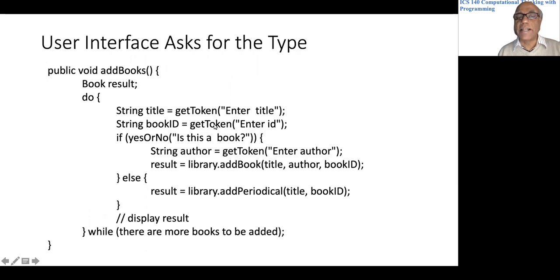It invokes the addBook method in Library with three parameters. That is what we had up until now. We are adding a new method called addPeriodical with just title and bookID to create a periodical and add it to the catalog.